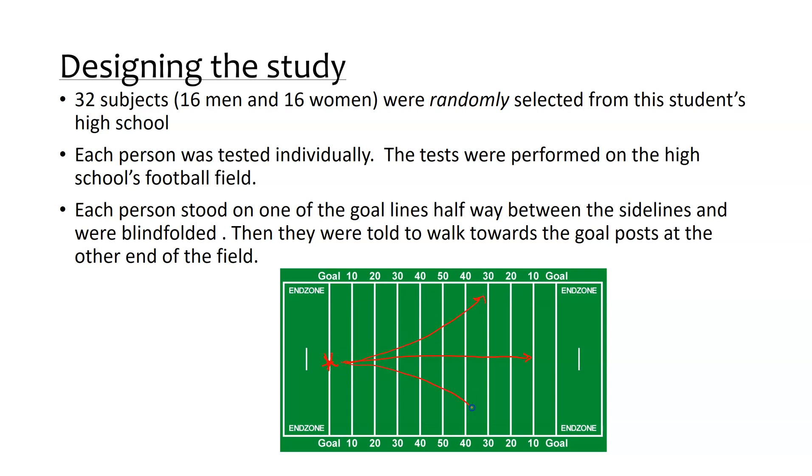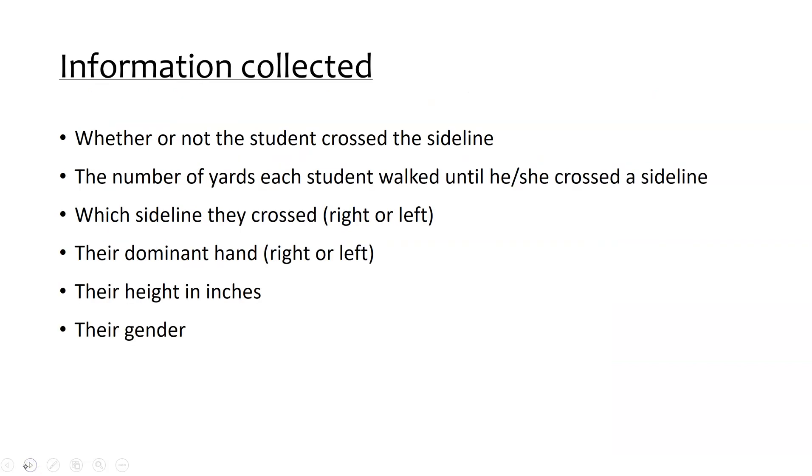And so a lot of information was collected: whether or not the student crossed the sidelines, the number of yards that they went until they crossed the sidelines if they did, which sidelines they actually crossed (was it left or right), also measured what was their dominant hand, how tall they were, as well as their gender.